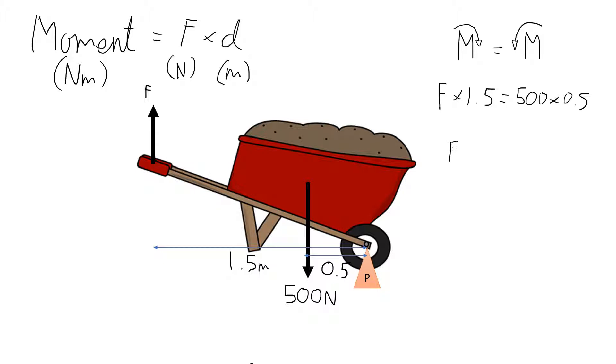So, rearranging this, we would get F equals 500 times 0.5 is 250, divided by 1.5. This should give us a force of 166 repeating newtons.